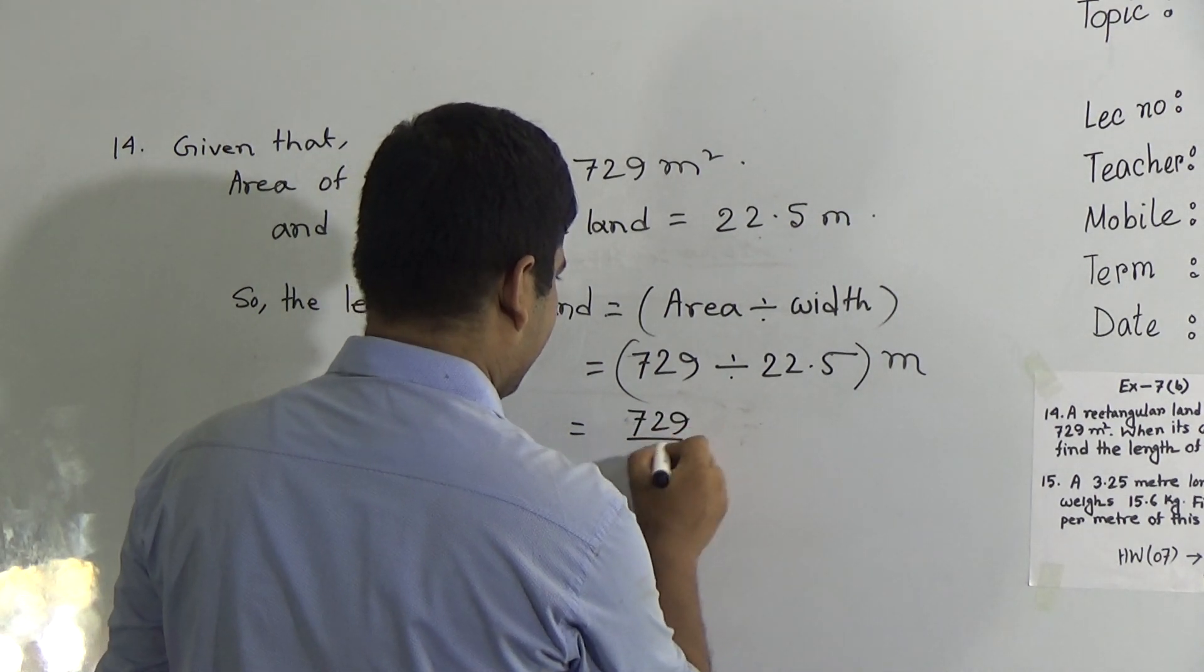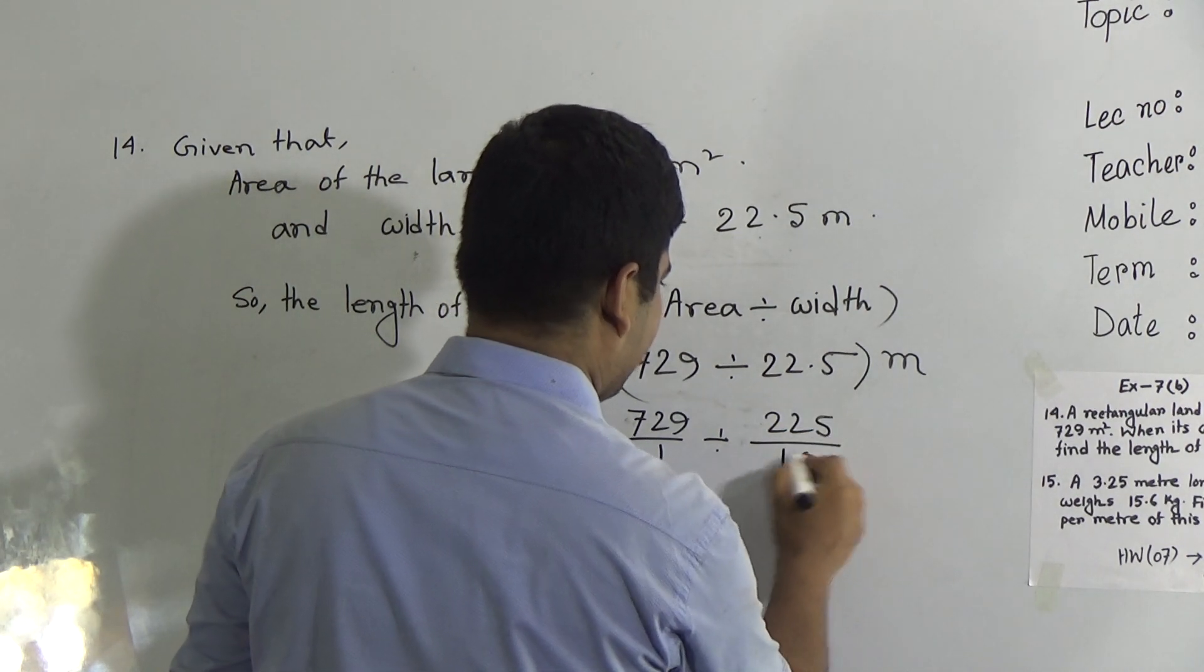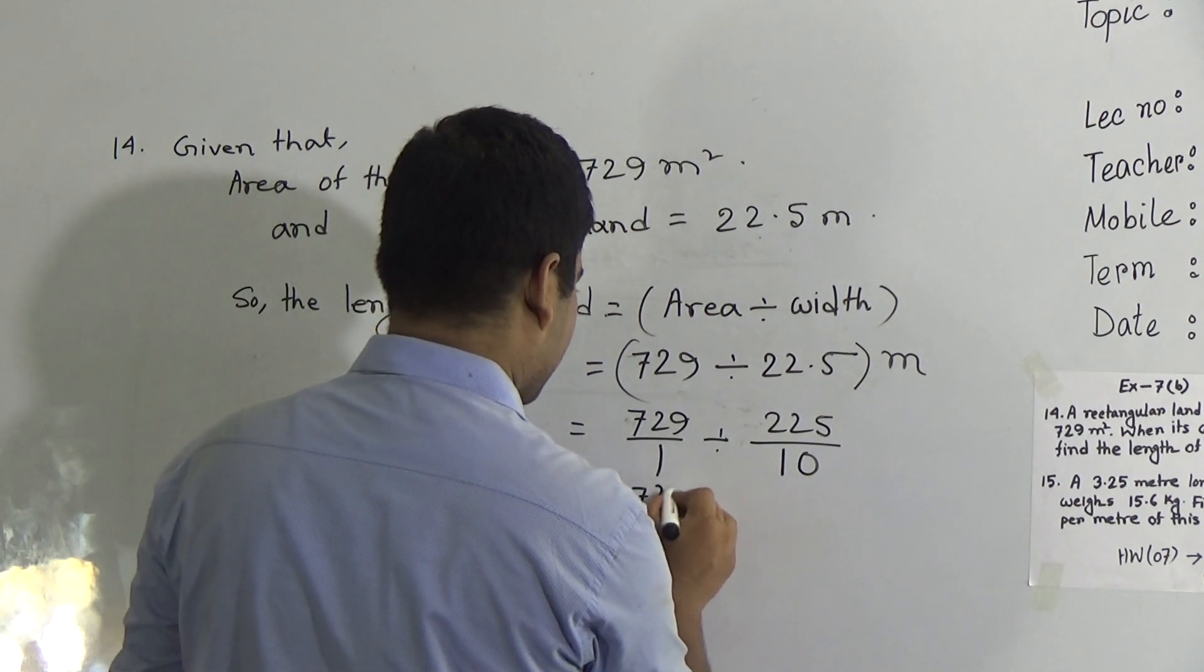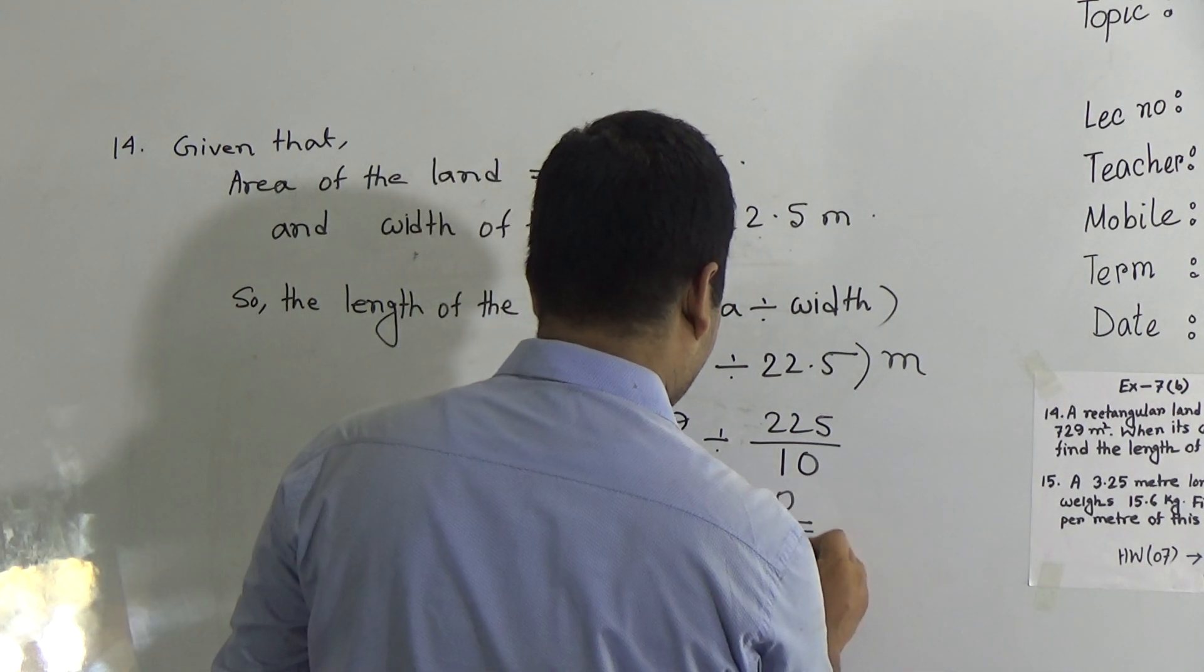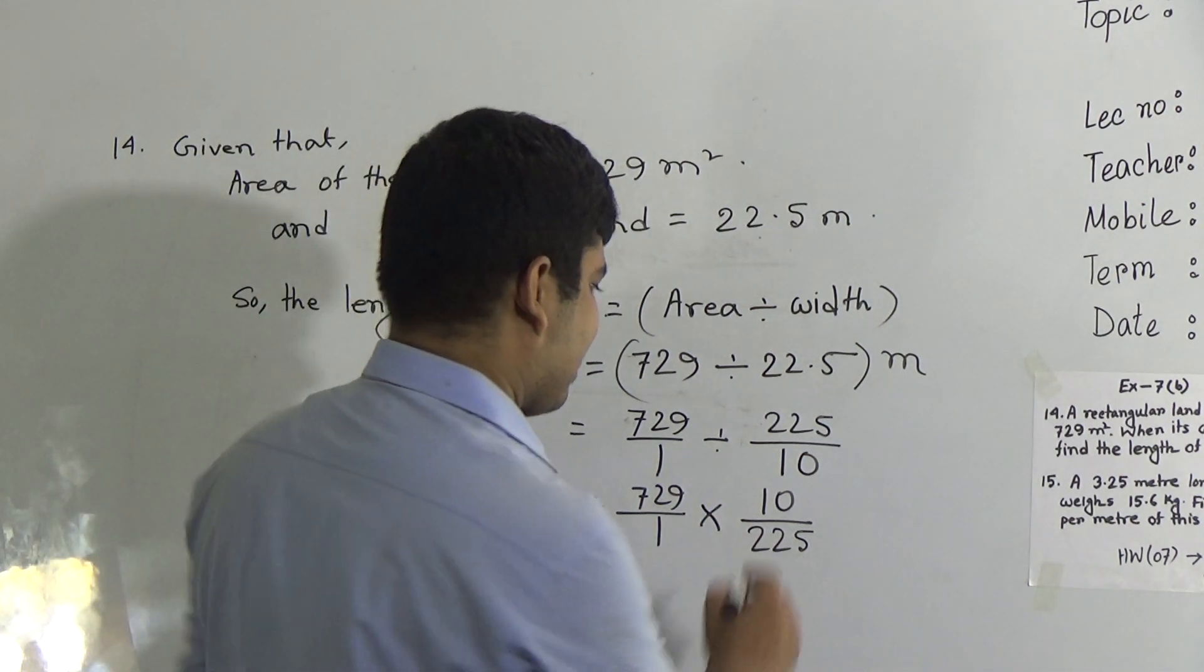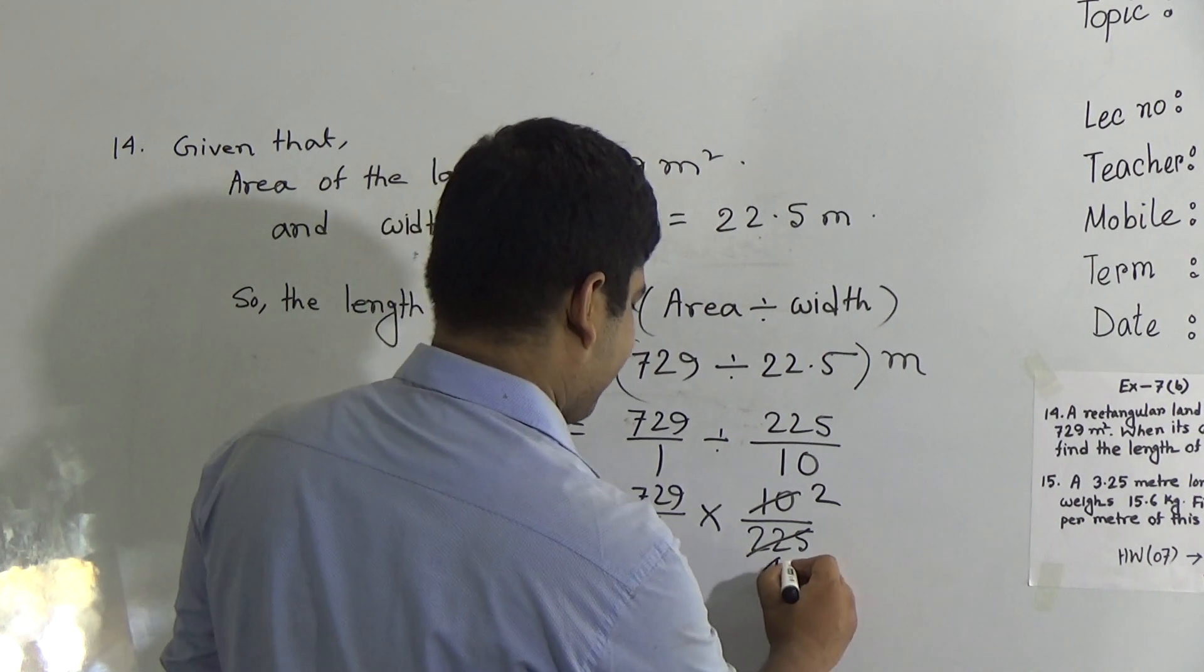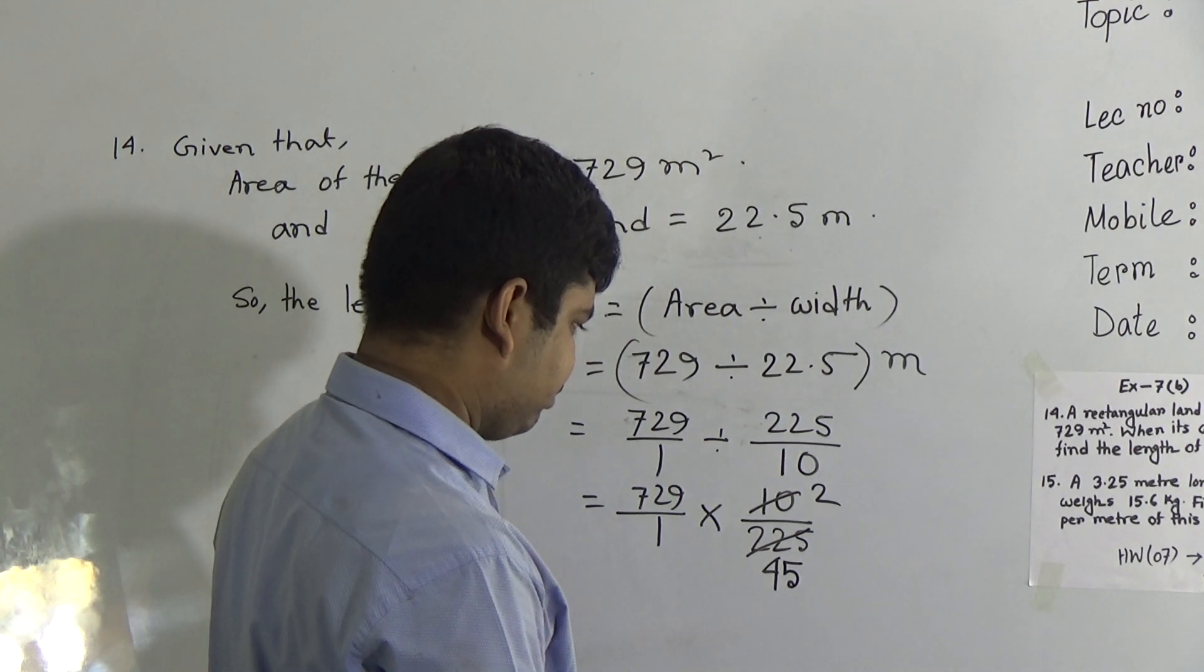So area is 729 and width is 22.5. So 729 by 1, 225 divided by 10. Why 10? For point 1, and after point there is 1 digit, so 10. So 729 by 1 multiplied by 10 by 225. Now my dear students, we cut this 10 and 225 by 5. 5 twos are 10 and 5 forty-fives are 225.